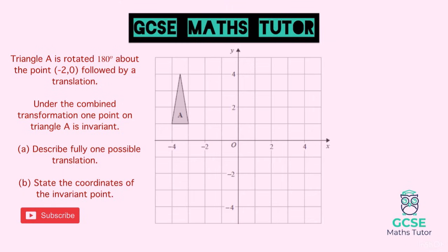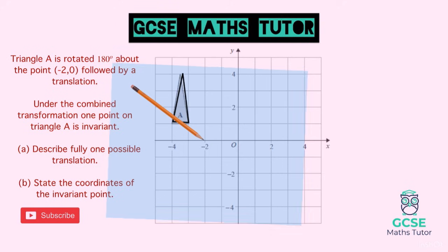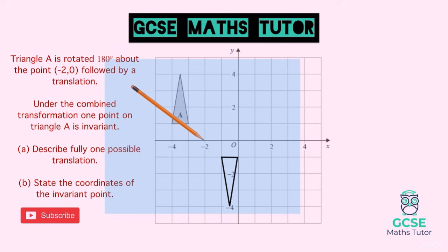Using tracing paper, we trace over the shape and rotate it 180 degrees with the pencil on coordinate (−2, 0). Since it's 180 degrees, the direction doesn't matter — the triangle ends up in its new position. We then lift the tracing paper and draw the new triangle. Now we need to think about how to translate this new triangle to create an invariant point.